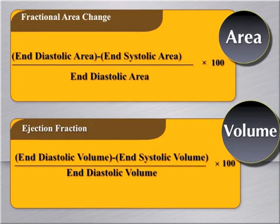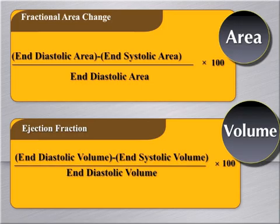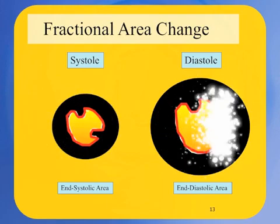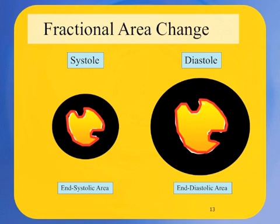Fractional area change is another approach to quantify LV function. The calculation is identical to that for shortening fraction or ejection fraction, except that areas are used instead of diameters or volumes. Similar to shortening fraction and ejection fraction, it is a two-dimensional measurement and may not accurately reflect the contraction of the entire left ventricle. To obtain the end systolic and end diastolic area, the endocardial borders are traced when the ventricle is smallest for end systole and largest for end diastole. The papillary muscles are excluded from the cavity area, and the LV systolic area is subtracted from LV diastolic area, then divided by LV diastolic area and multiplied by 100.